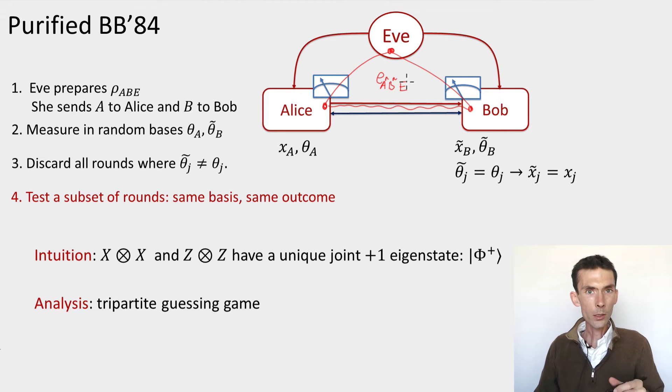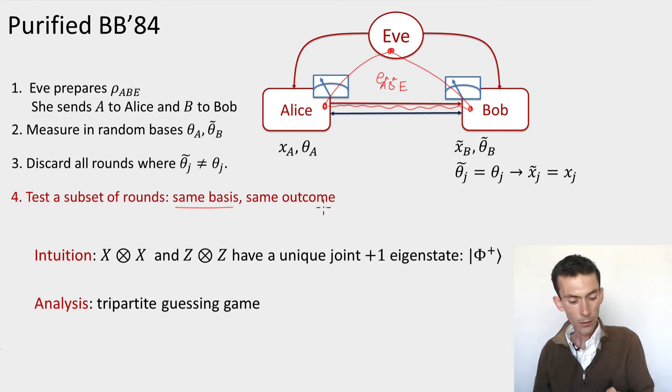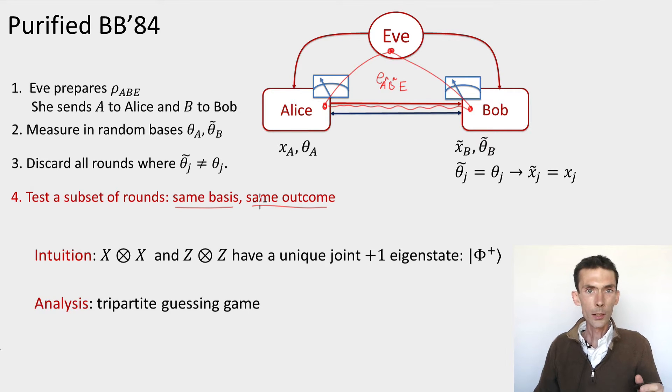Among the rounds where the bases were the same, they choose a random subset in which to perform tests. The tests they perform is that as long as they use the same basis, they should have the same outcome. And then if this is the case, they proceed using the untested outputs from untested rounds in order to extract their final key by first performing information reconciliation and then privacy amplification. So that was the protocol.